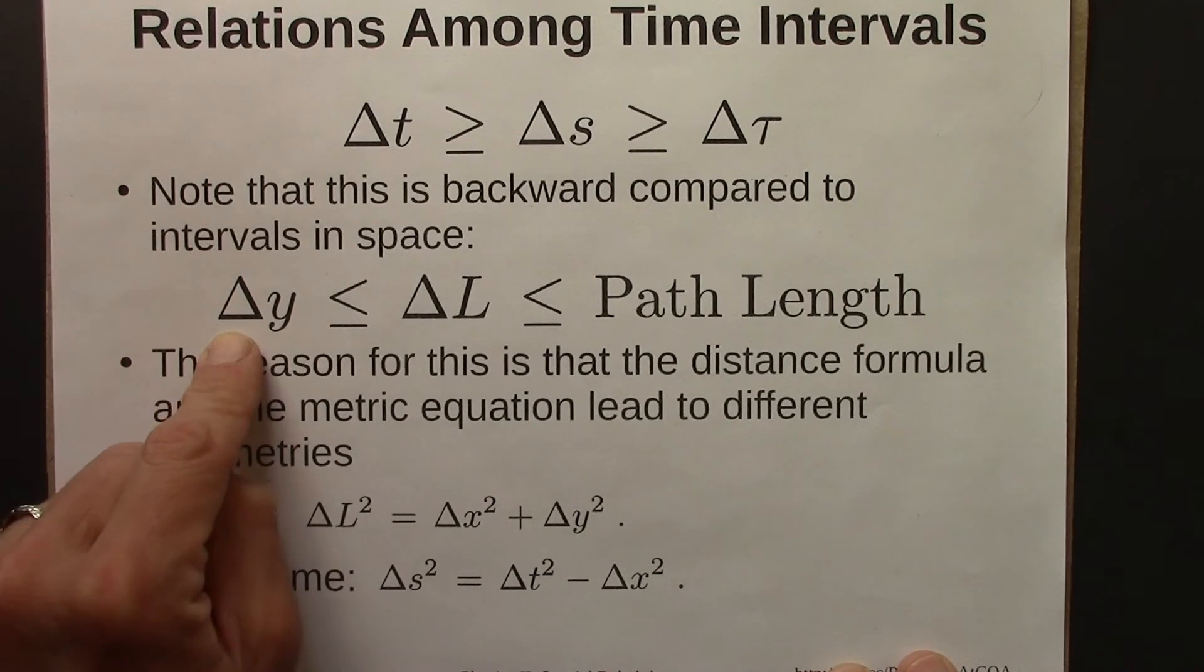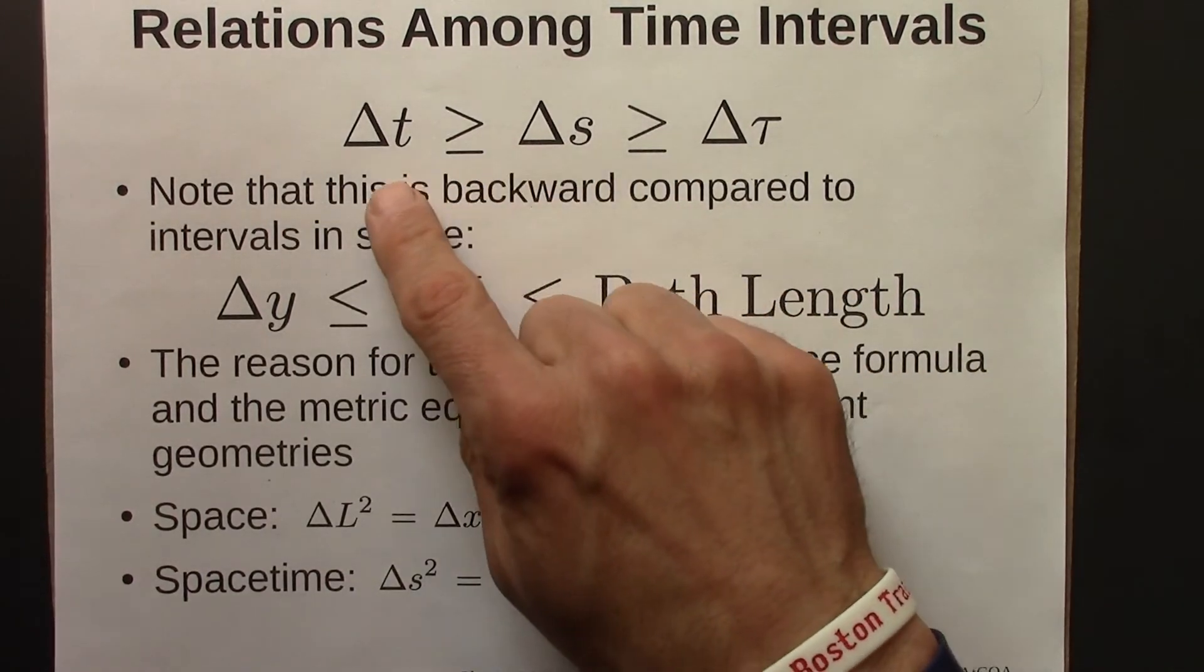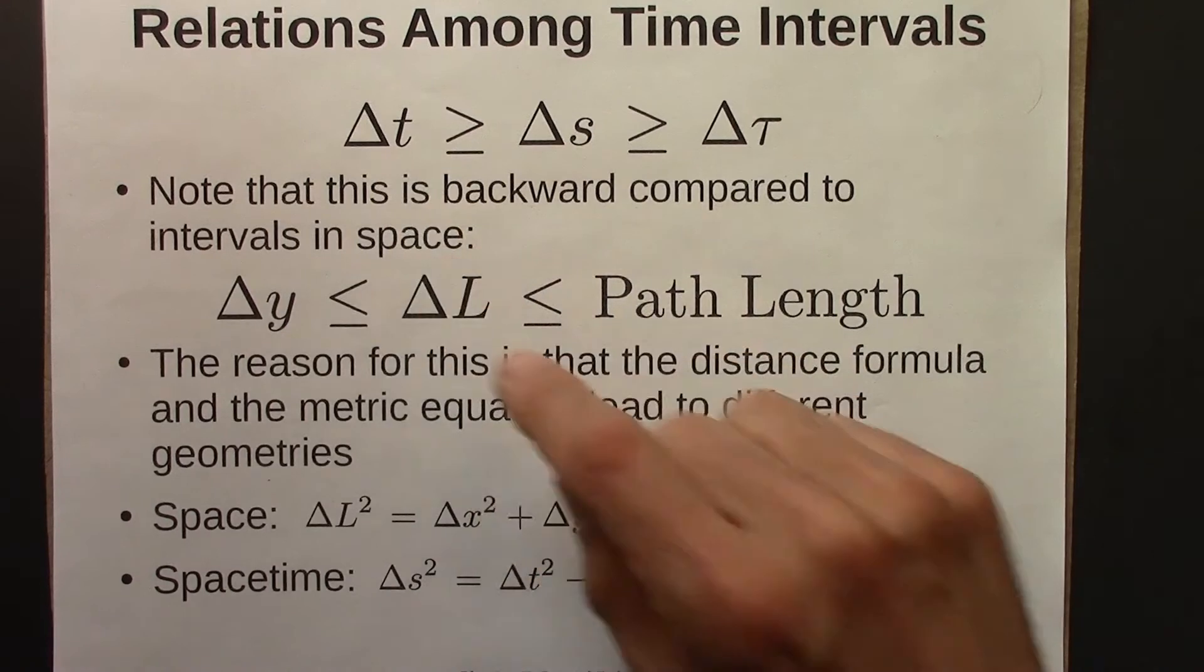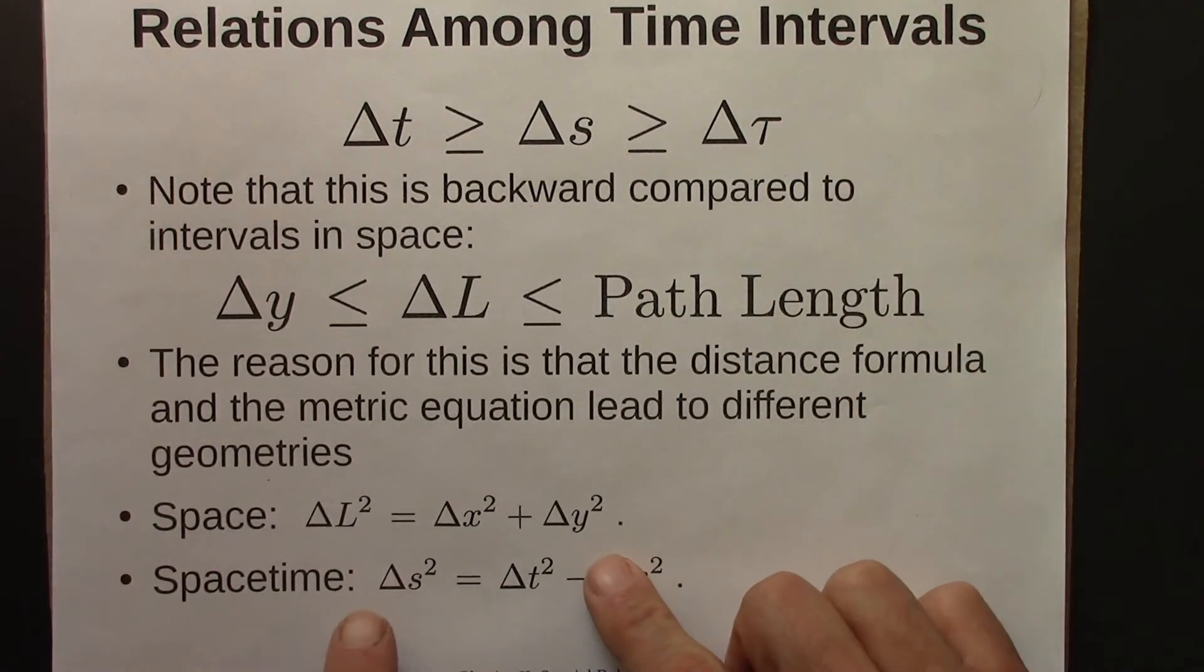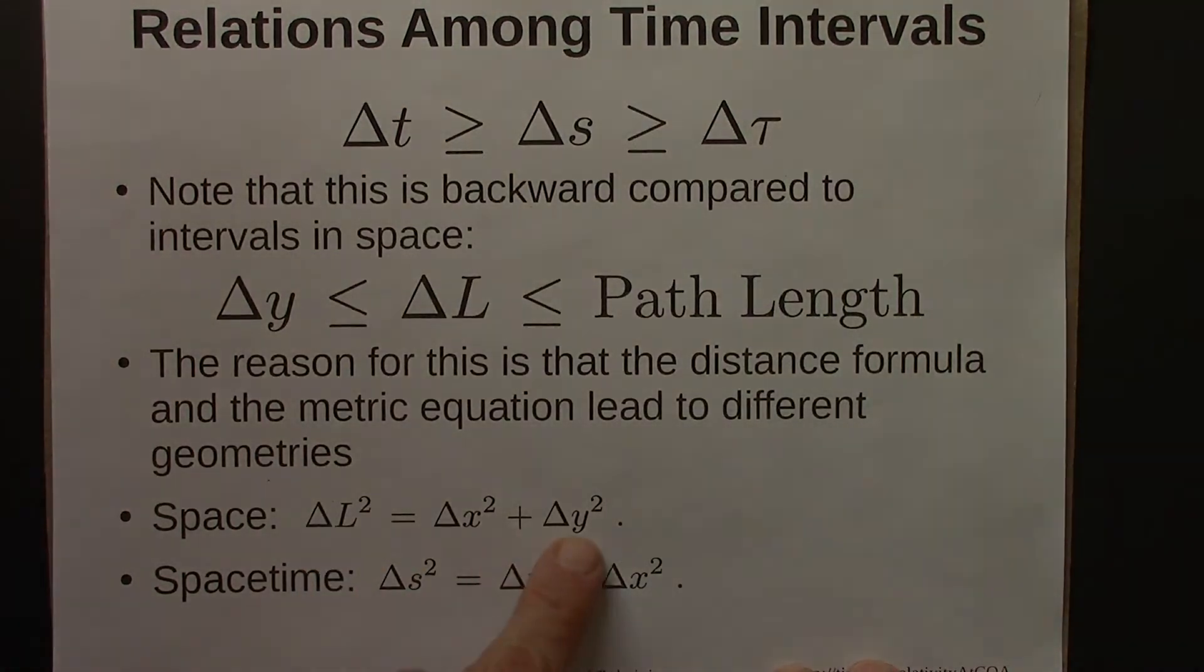The situation is reversed for time intervals in special relativity. The proper time interval is the shortest time interval, and then we have the space-time interval, and then we have the coordinate time. So why are these backwards? That all stems from the fact that they have different geometries. So that the distance equation, or the metric equation for space, is the Pythagorean distance formula. But for space-time intervals in space-time and relativity, it's not Pythagoras, so there's this minus here. And that imposes a different geometry on space-time than there is on space itself.